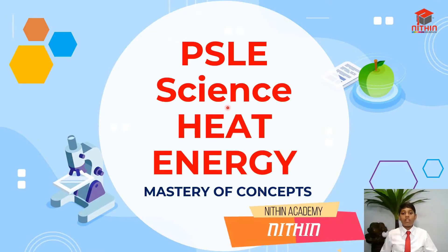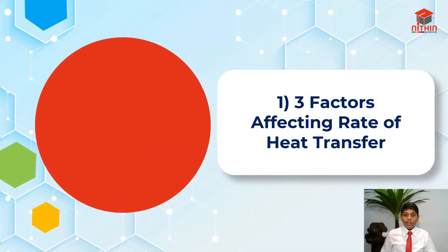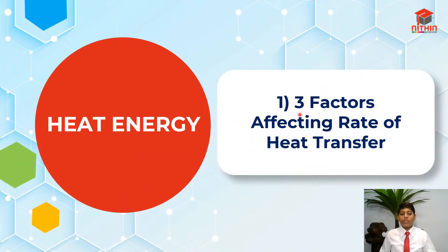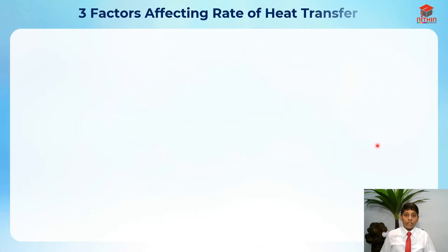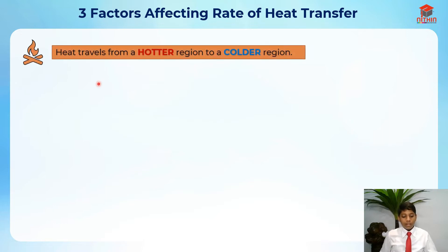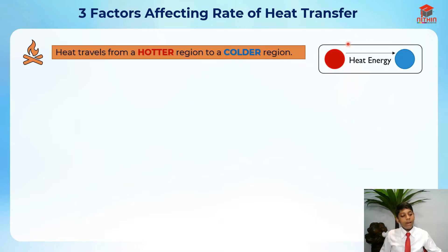Hi everybody, my name is Nitin and welcome back to PSLE Science. In this video I'll be going through heat energy. For the first segment, I'll cover the three factors affecting the rate of heat transfer. First, we need to know that heat travels from a hotter region to a colder region — the red color represents the hotter region and heat travels from hot to cold.